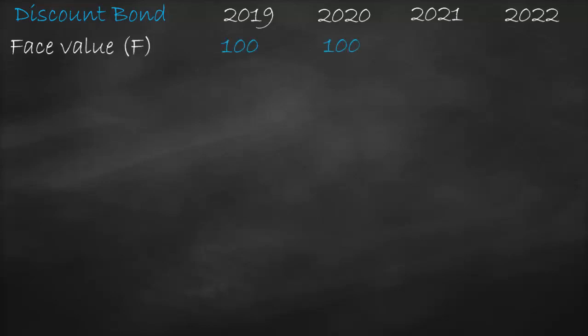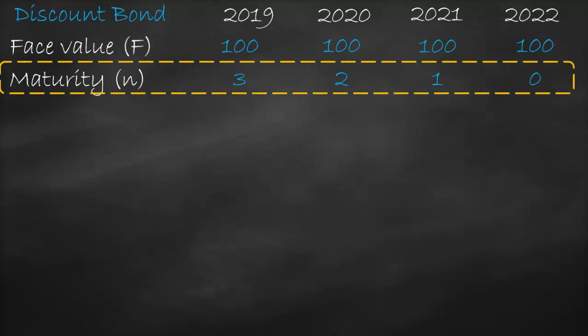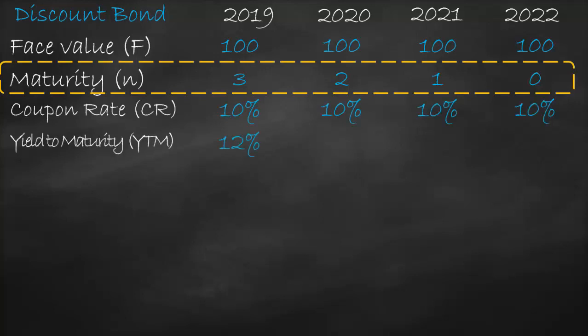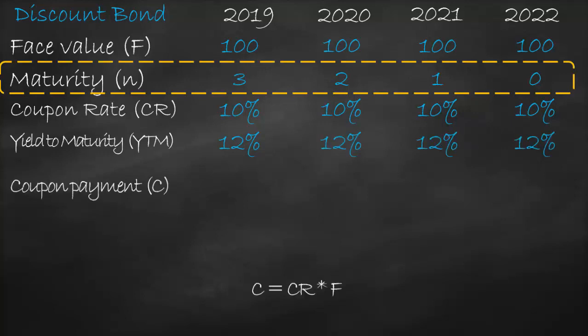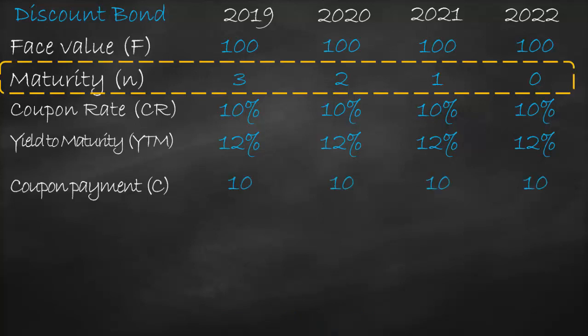Now our third scenario: the discount bond. Years are 2019, 2020, 2021, and 2022. Face value is 100 every year. Maturity N: 3 in 2019, 2 in 2020, 1 in 2021, and 0 in 2022. Coupon rate is 10%, and yield to maturity is 12%, because for a discount bond, coupon rate is lower than yield to maturity. Coupon payment is 10% times 100, which equals 10 every year.